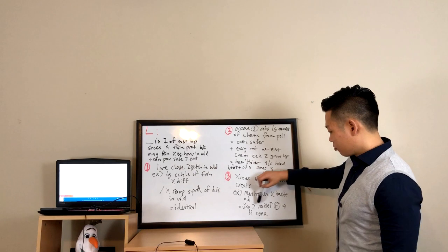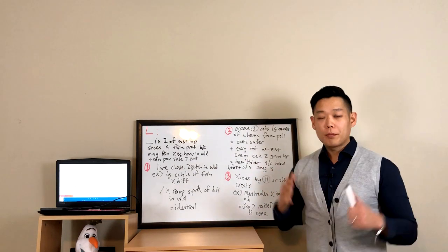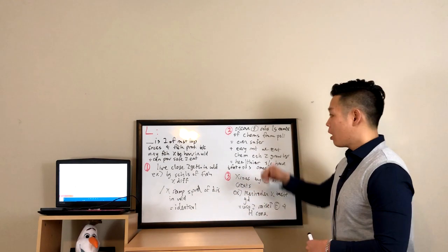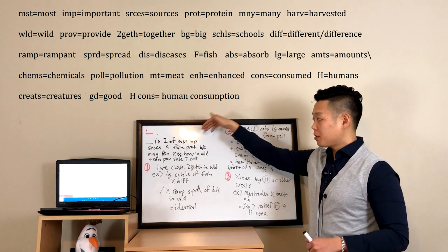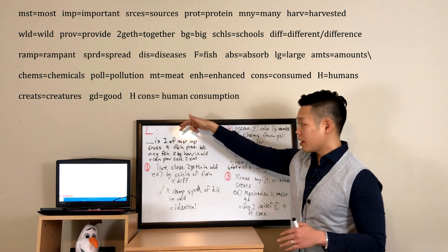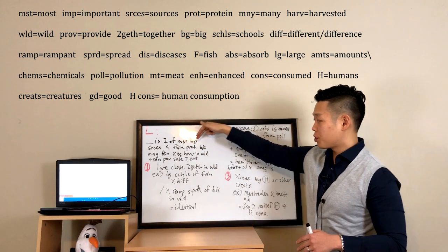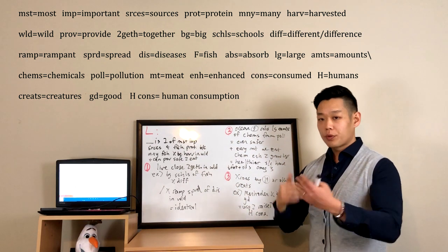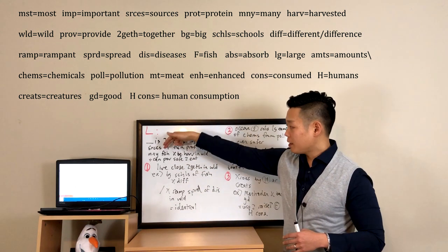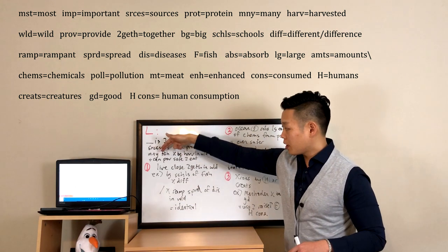All right, now before I type my sample essay, let's look at the notes and understand what the professor said. Okay, now the professor's opinion in this lecture was very extensive. So he started out by saying that fish farming is actually one of the most important sources for fish protein, and then he talked about the reading's opinion, and then gave us the reason: because many fish cannot be harvested in the wild anymore, and fish farming can provide fish that are safe to eat.